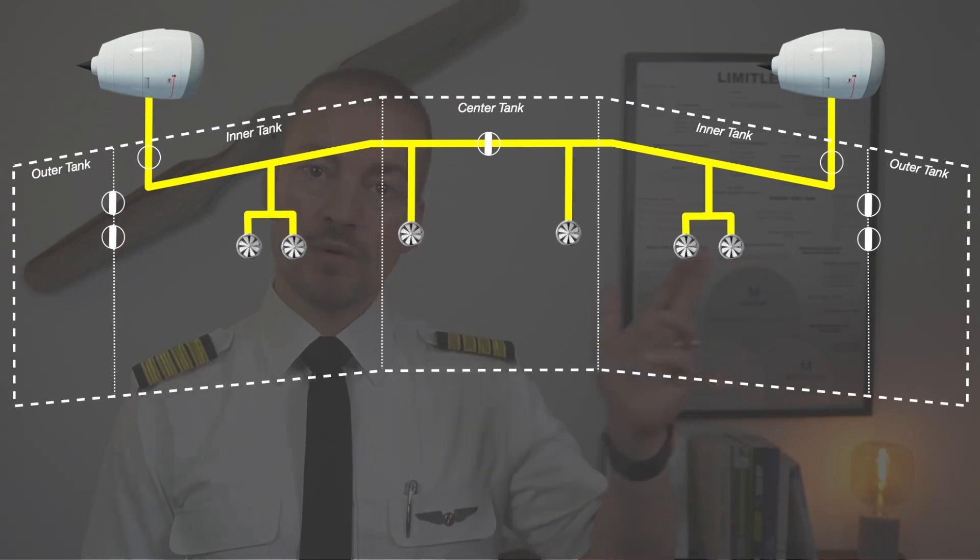These fuel pumps are electrically driven by AC power and allow fuel to be pushed to the engine with positive pressure to prevent cavitation. Each booster pump can be controlled by the overhead panel but operates automatically in normal operation. The fuel pumps are on continuously unless they're turned off manually from the overhead panel.